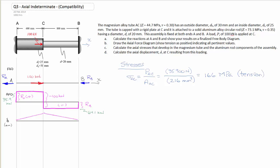That is the internal axial stress in the hollow shaft AC. Now we calculate the stress in CB: the load P_CB divided by the area A_CB. Looking at the axial force diagram, the load is 64.1 kilonewtons, or 64,100 newtons, divided by the area of 314 millimeters squared, giving us a stress of negative 204.1 megapascals — identified as compression.